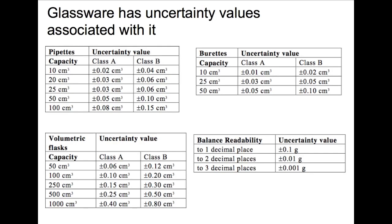Each piece of glassware has an uncertainty value associated with it. These uncertainty values change depending on the volume and the class of your glassware. Class A glassware is the most accurate and has the smallest uncertainty values. Class B is a lot more common within schools. You can find out what class your glassware is by looking at the top of the glassware — for example, near the top of a pipette it will tell you the total volume, what class it is, and it will often tell you the uncertainty value itself.